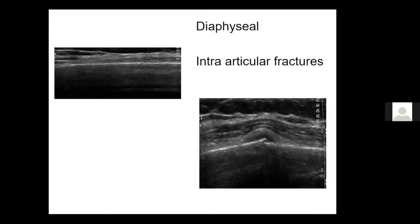But when the bone becomes fractured, as in this case, we can see there's a cortical break. And then this is really interesting — it's fluid. It's blood in a subperiosteal position. This is the periosteum. It's the presence of fluid, which ultrasound is excellent at demonstrating, that gives us the diagnosis.